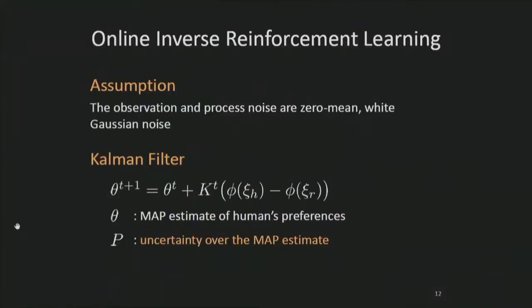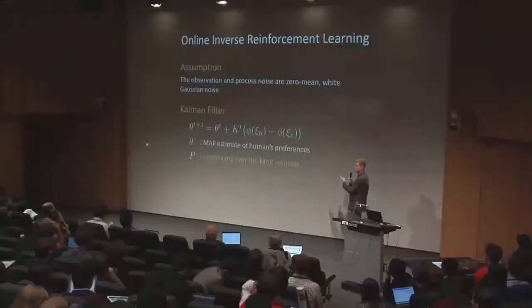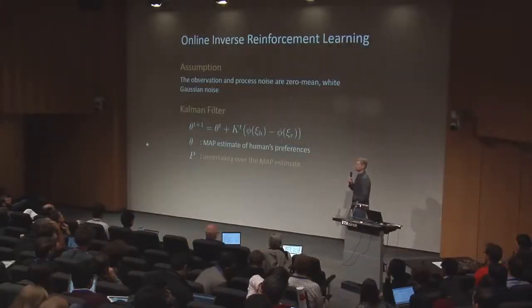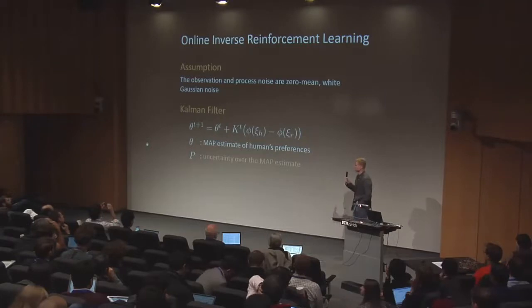If we assume that both the observation and process noise are unbiased and Gaussian, the optimal learning rule is a Kalman filter. This Kalman filter not only tells us the most likely human preferences, theta, but it also provides us with the uncertainty over this estimate, p.